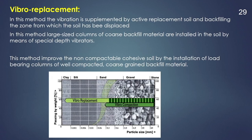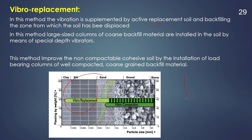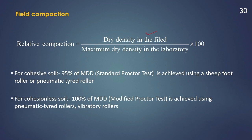Next is the vibro replacement method. Vibro replacement is a technique of constructing stone columns through the field material and weak soils to improve their load bearing capacity and settlement characteristics. In this method, the vibration is supplemented by active replacement of the soil and backfilling of the zone from which the soil has been displaced. This method is used for soil containing clay and silty soil. Large sized columns of coarse backfill material are installed in the soil by means of a special depth vibrator. This method improves non-compactable cohesive soil by installing load-bearing columns of compacted coarse grained backfill material. In this method, a hole is first made and then filled with stone.